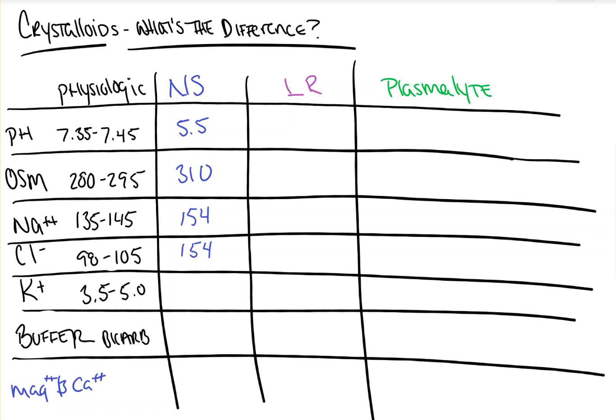Next, we have lactated ringers, sometimes called the surgeon's solution, named because surgeons prefer it because of the lactate in it. Now, lactate's metabolic byproduct in the liver and in the kidneys is bicarbonate, the buffer in our blood, and this can help to counteract the acidosis experienced by patients who are going for surgery because they're septic or are bleeding.